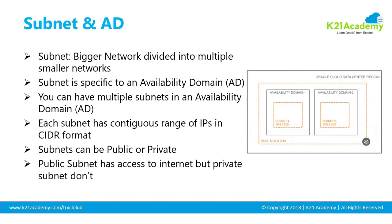VCN is a big network, and managing it becomes difficult. Also, applications are typically deployed in a three-tier architecture — DMZ, application tier, and database tier. So the bigger network is further broken down into smaller networks, and that's what a subnet is. When you define a subnet within a VCN, you're breaking it down into smaller parts, and subnets are specific to an availability domain.